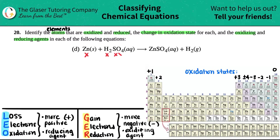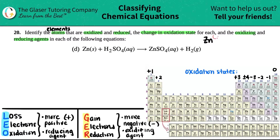Even though it sounds like a lot, I promise you it is the best thing to do to answer these questions. As you get more proficient and do more practice problems, this will come to you in two seconds. Let's work from left to right. Starting with Zn — zinc is just by itself. Remember, any element that's by itself with no charge in the upper right-hand corner is always a zero charge.